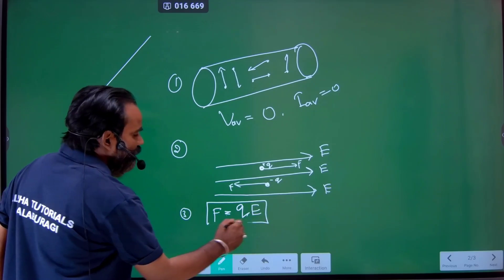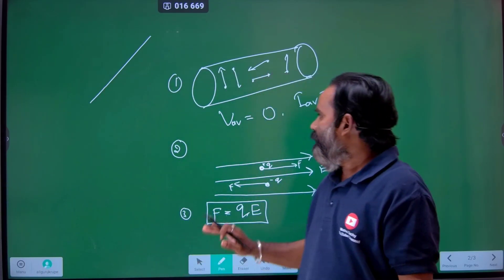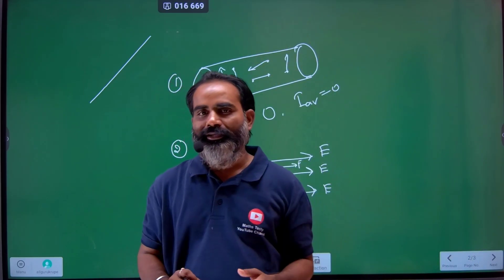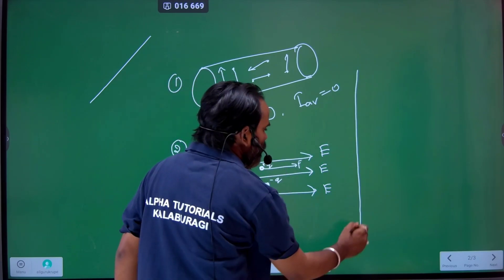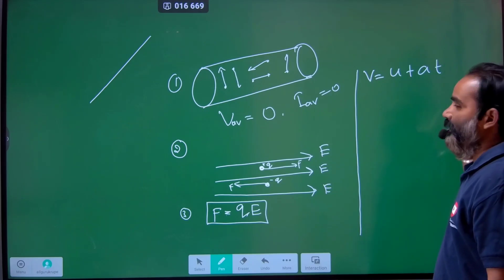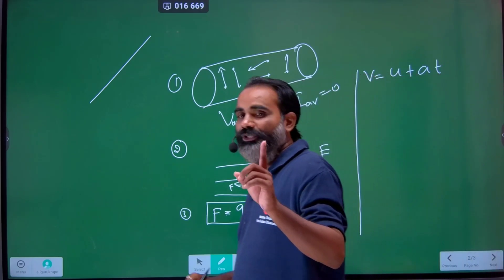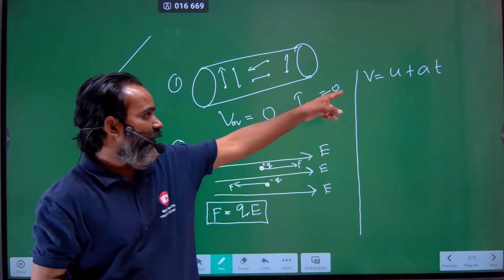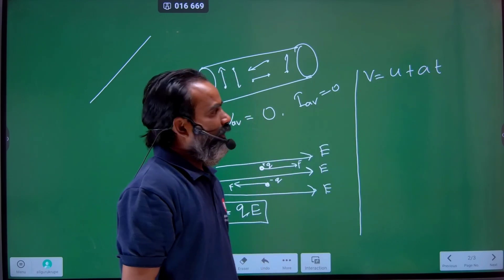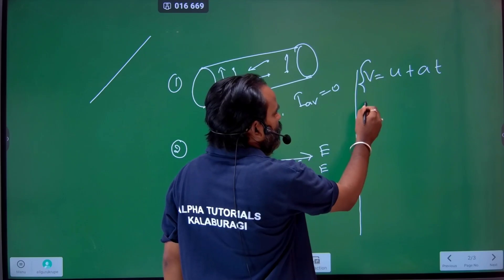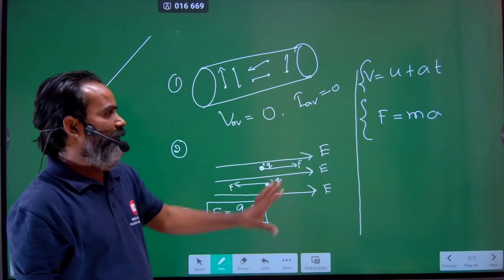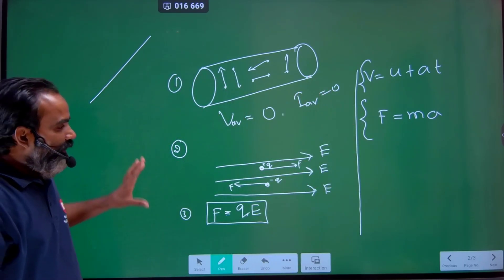F is simply equal to qE. The plus or minus simply indicates the direction of motion. Now using Newton's first equation of motion: V equal to U plus AT, where V is final velocity, U is initial velocity, A is acceleration, and T is time. Newton's second law gives F equal to M into A.